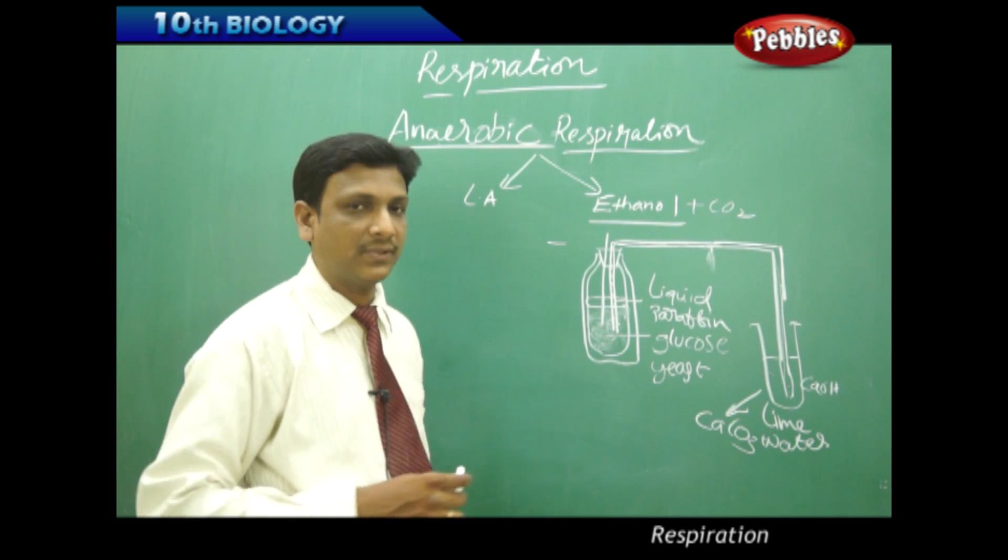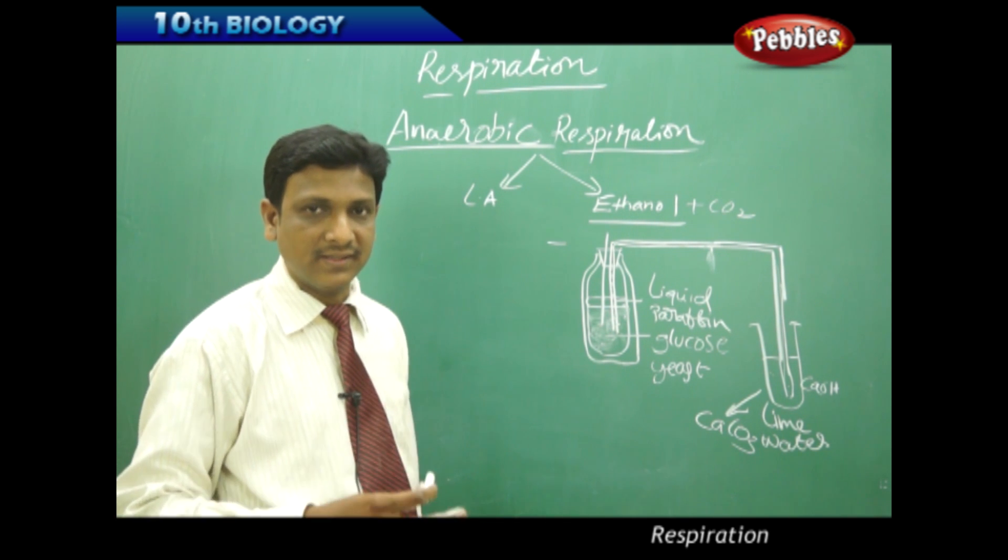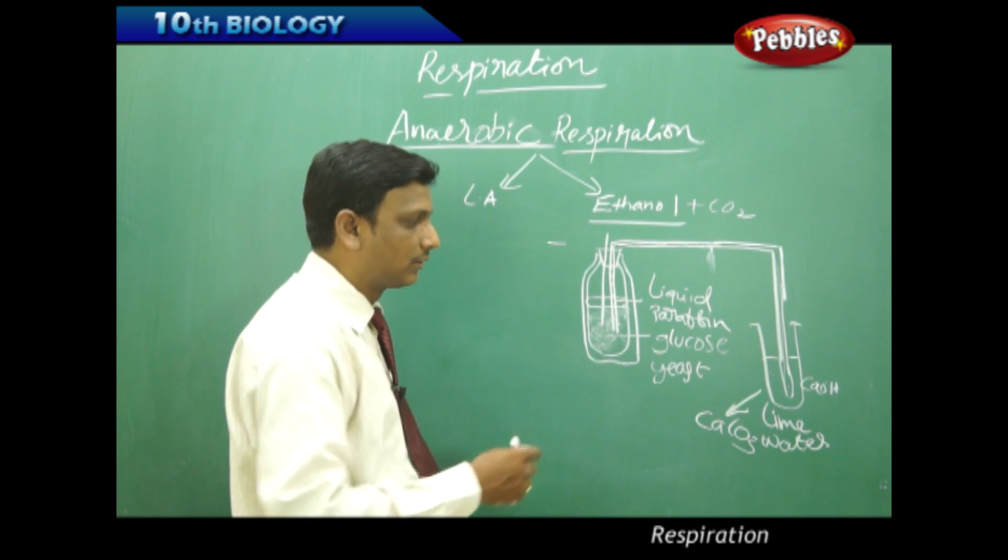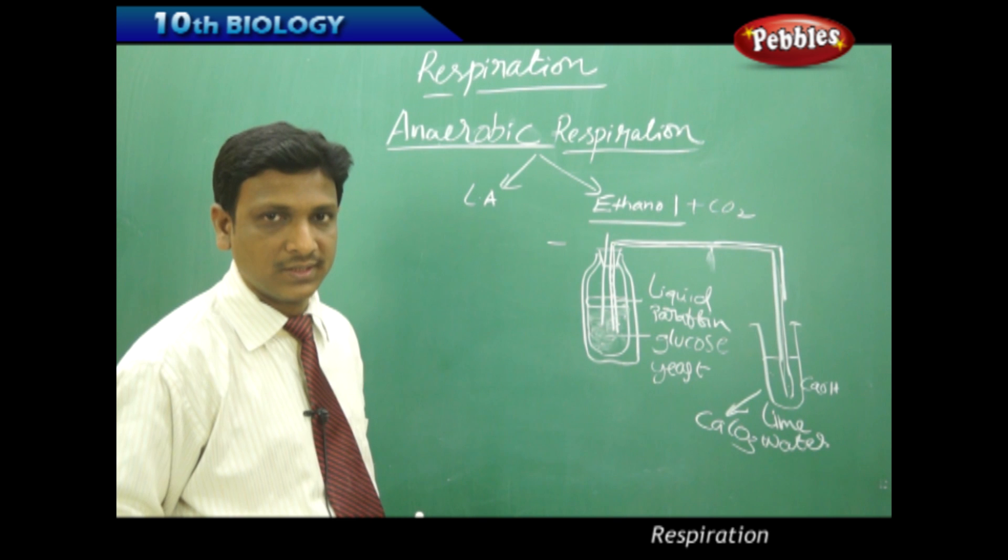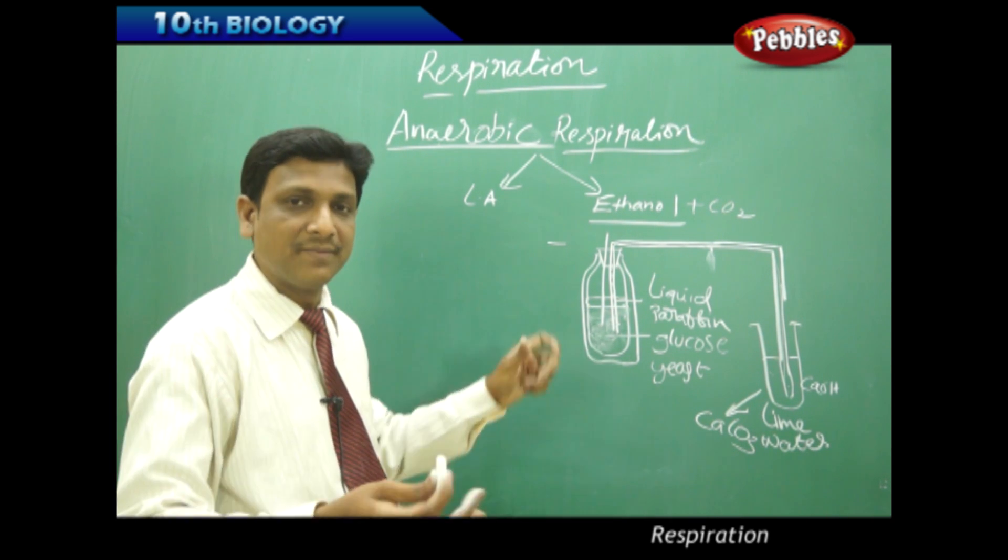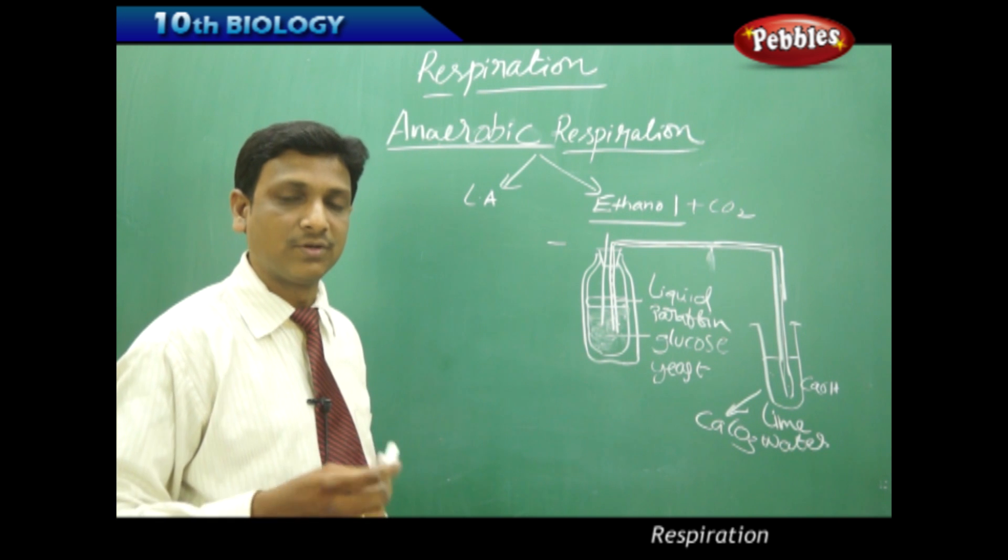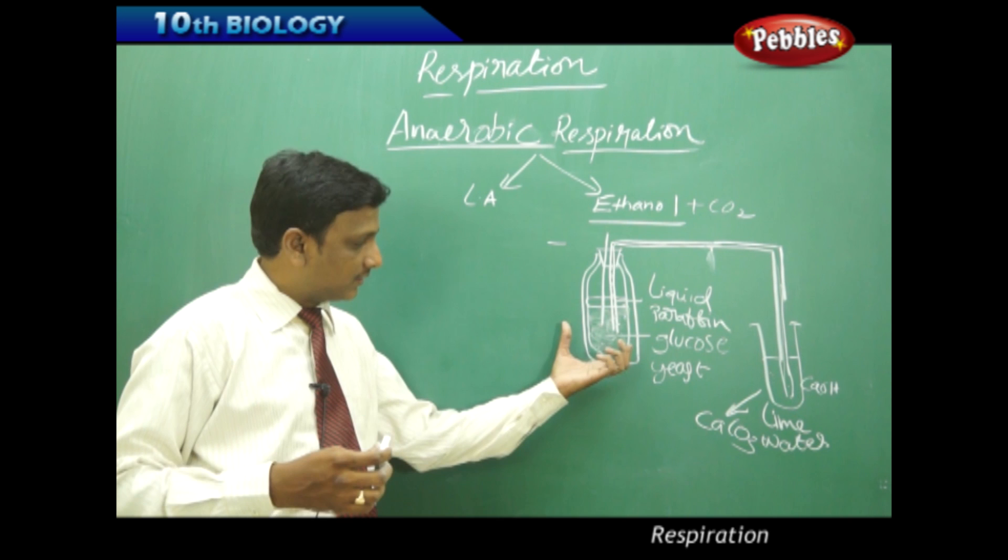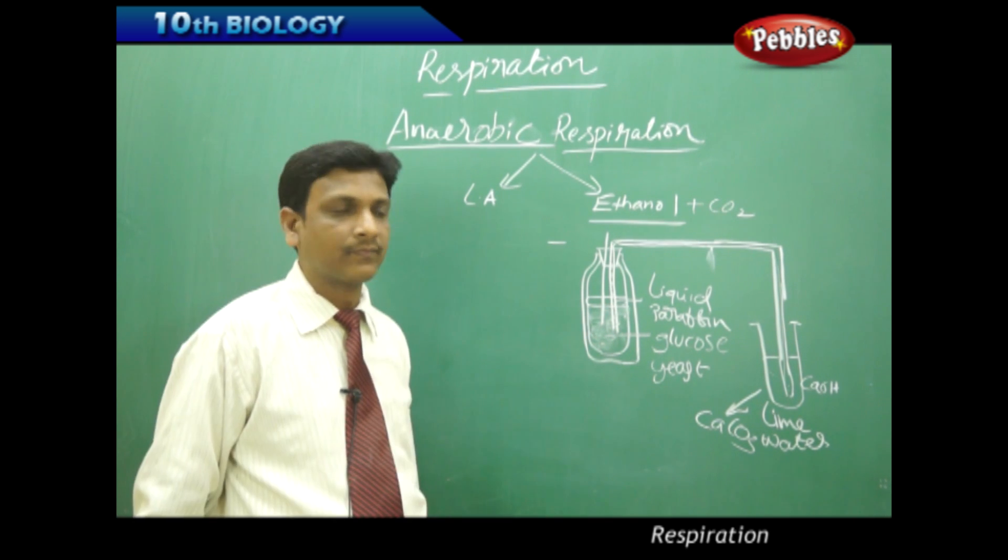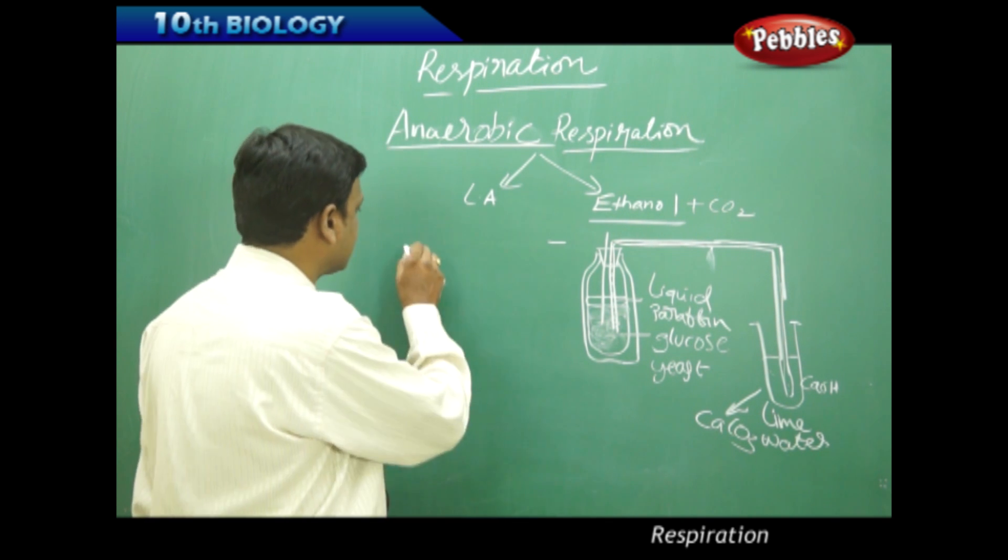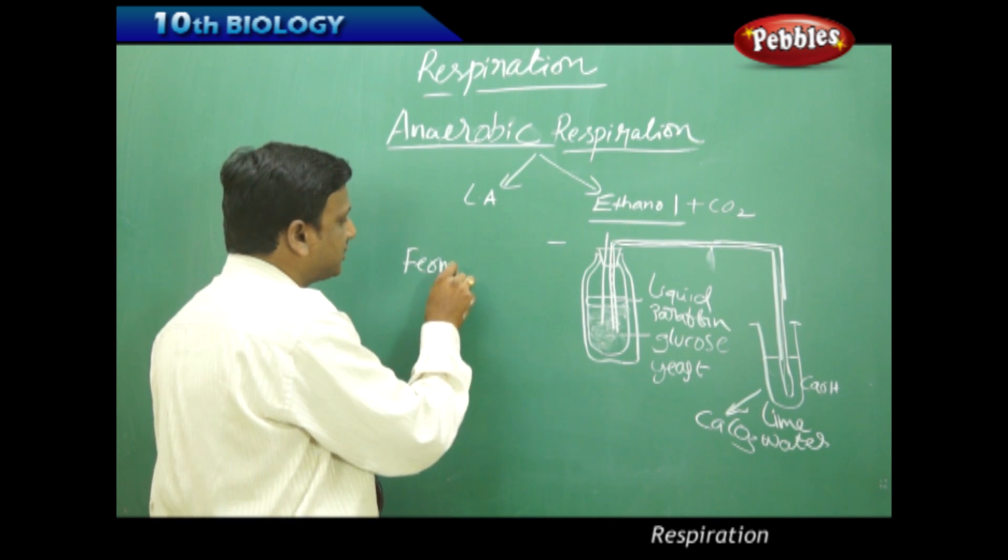By this setup we can understand that in absence of oxygen, yeast converts the glucose into alcohol and carbon dioxide. The liquid prepared here contains alcohol. Alcohol also can be tested—alcohol has got different tests. By that we can confirm the material synthesized or prepared here is alcohol. This process of conversion of sugars to alcohol is termed as fermentation.